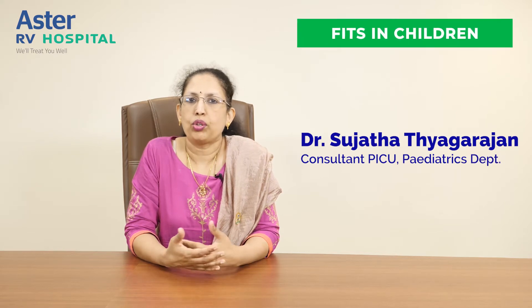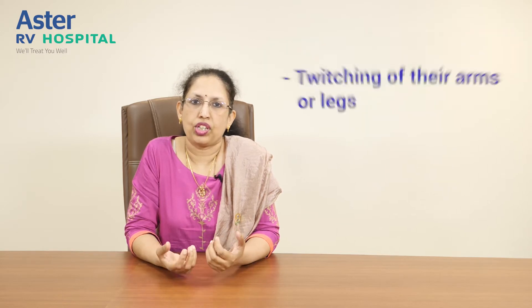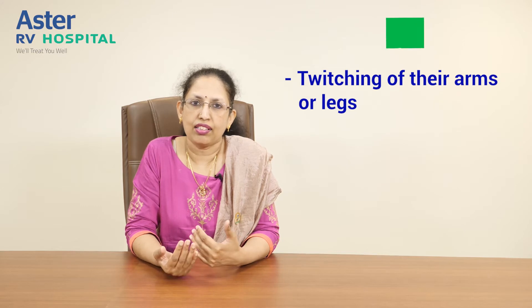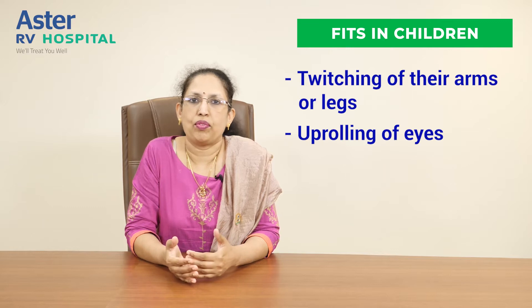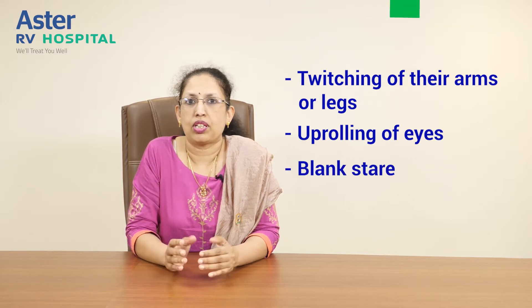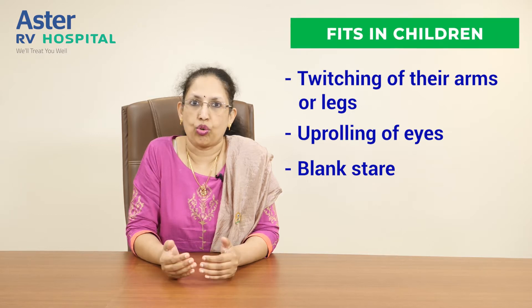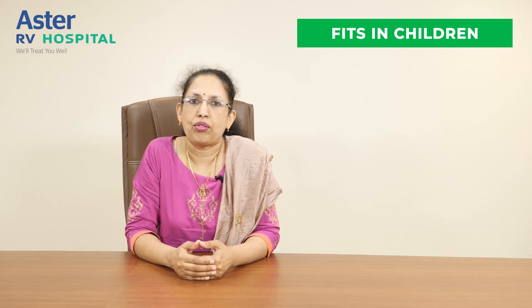In continuation with our first aid series for parents, today we're going to talk about fits. Any child who has twitching of their arms or legs, or up-rolling of eyes — that is one of the commonest types of fits that we see. Some children may just have a blank stare, and that's also a type of fits.